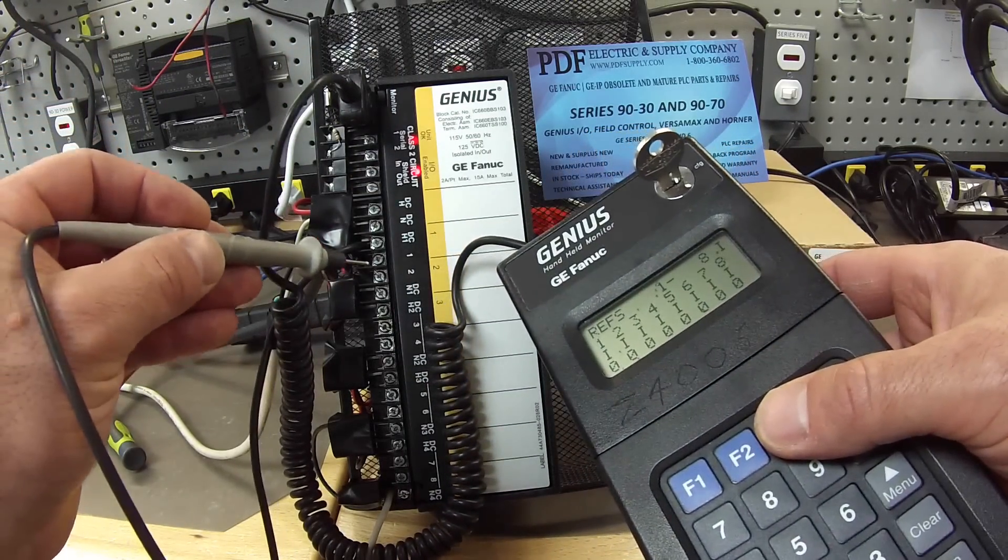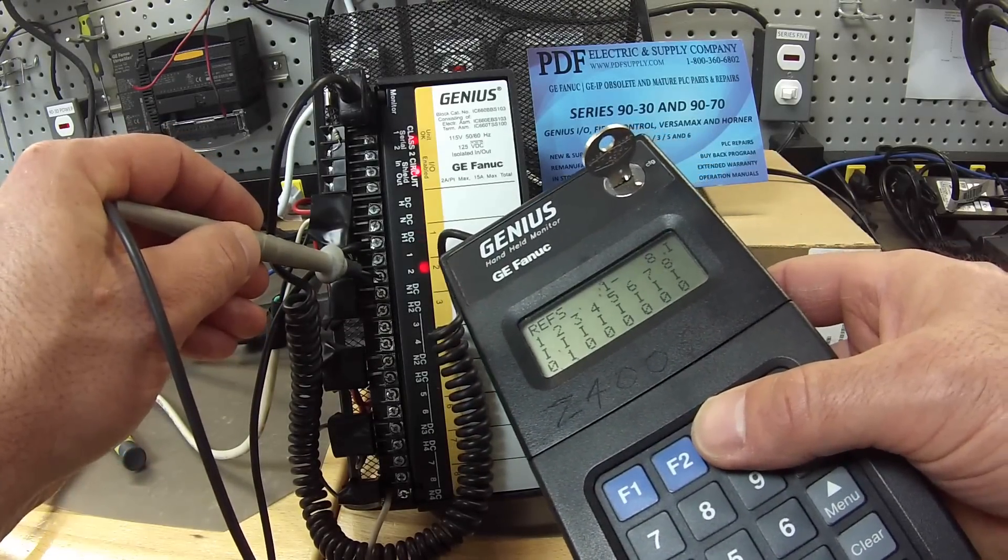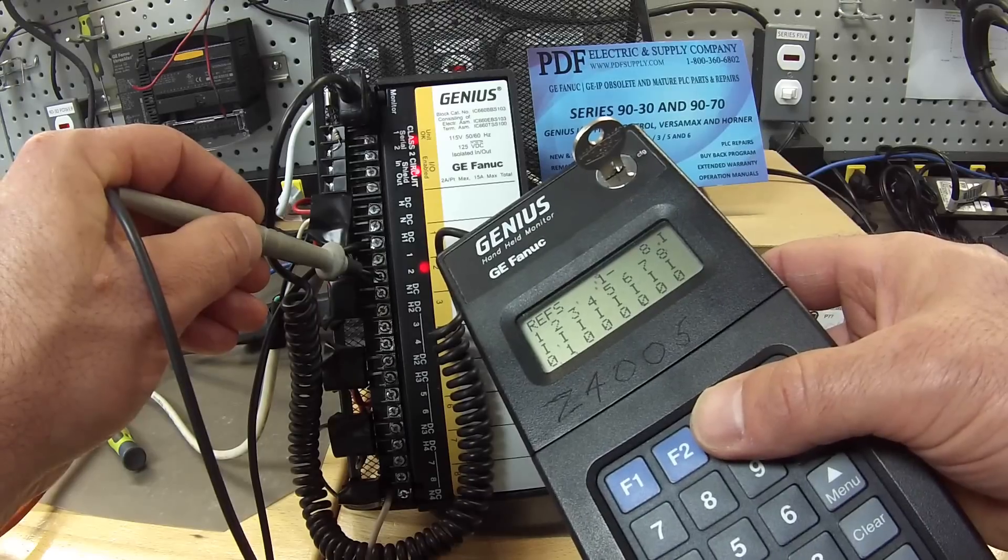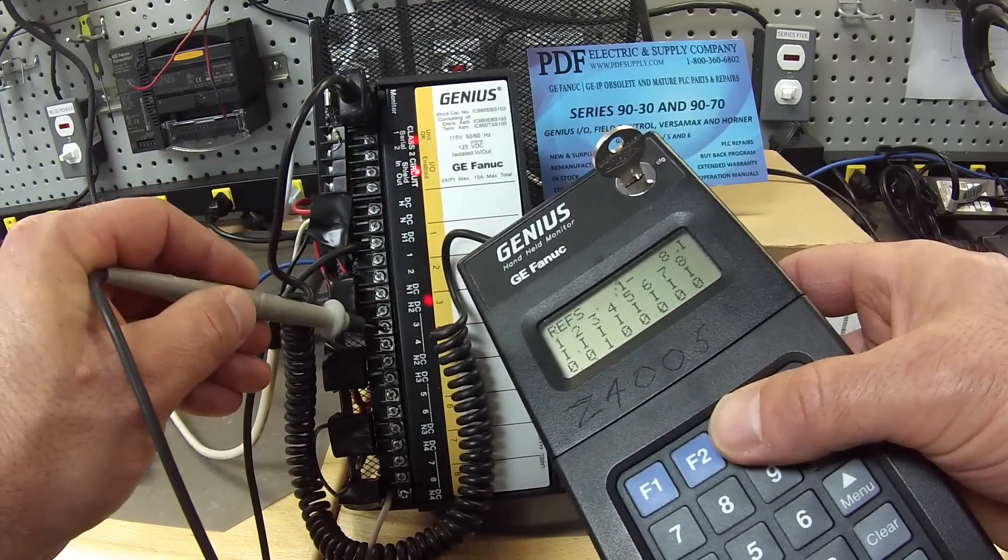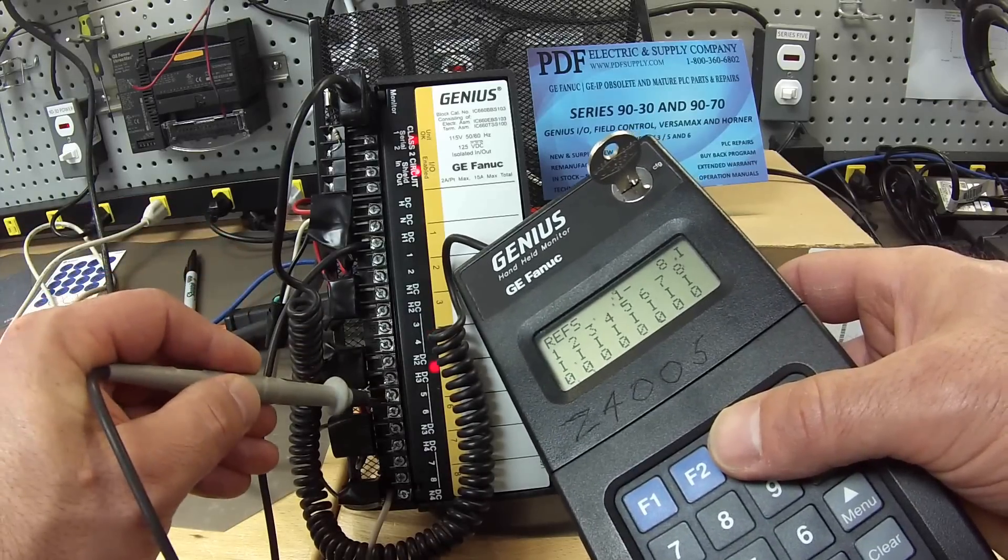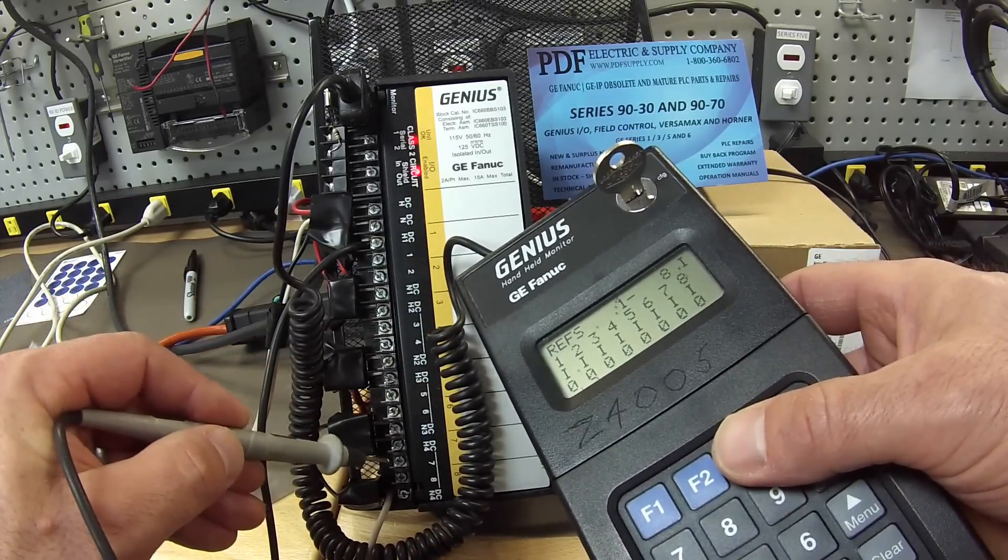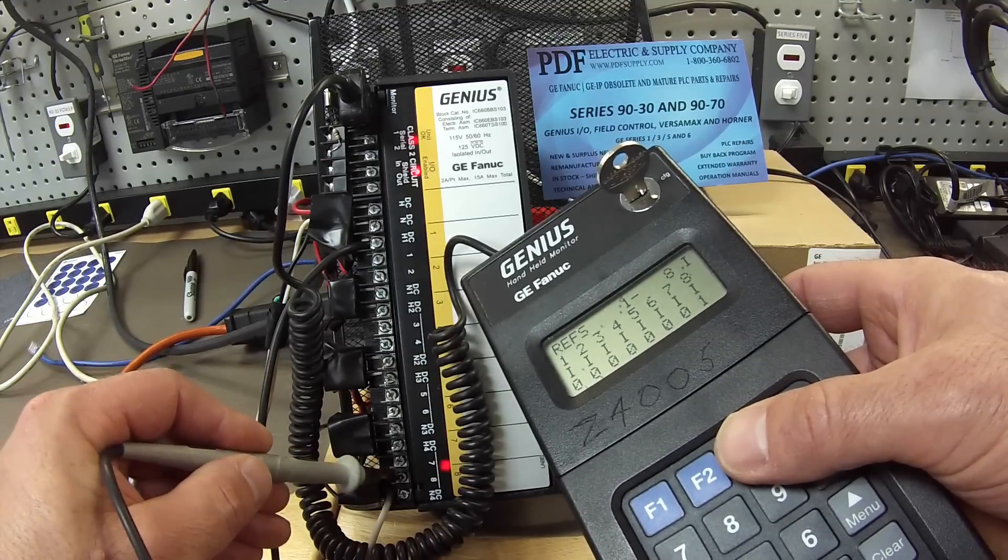So I'll go ahead and touch my hot lead to one, turns to a one. Two, zero turns to a one. I'm going to go through the other ones, three, four, five, six, seven, and eight.